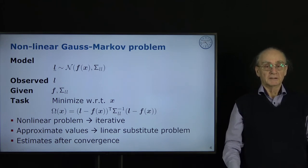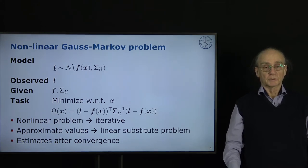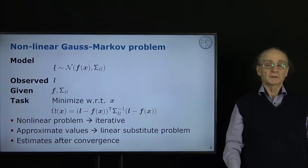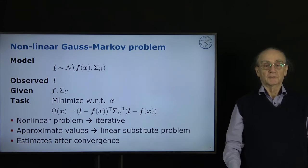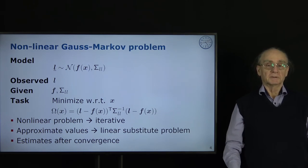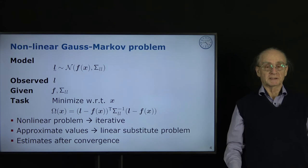The problem is non-linear in general, so we have to iterate. Therefore we need approximate values in general, then we derive a linear substitute problem in the form of a Gauss-Markov model. After iteration we get best approximations, which we take as estimates of the optimization problem.